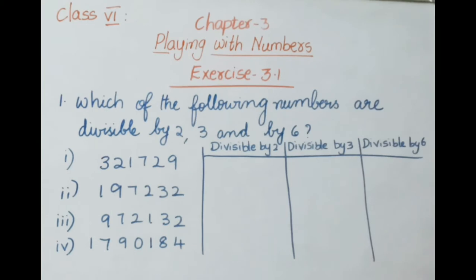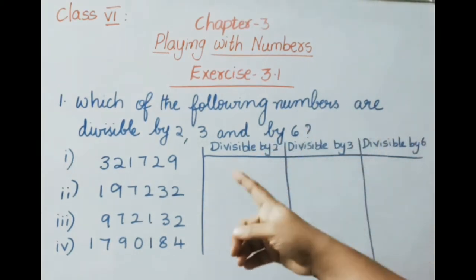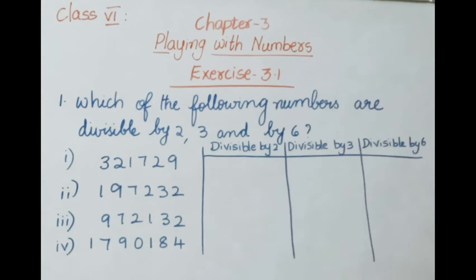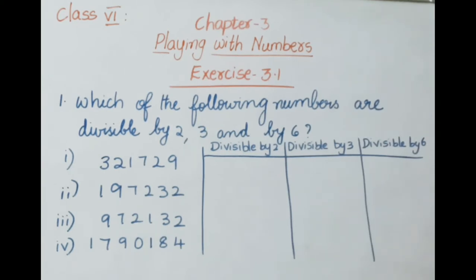The first question asks which of the following numbers are divisible by 2, divisible by 3, and divisible by 6. For divisibility by 2, if a number has 0, 2, 4, 6, or 8 in its ones place, then the given number is divisible by 2.